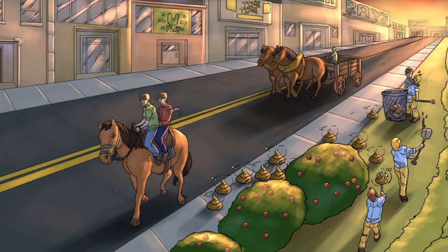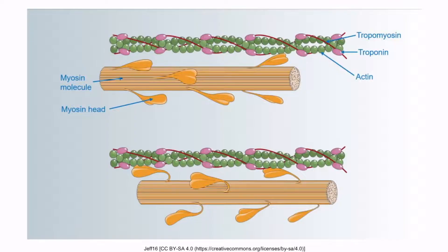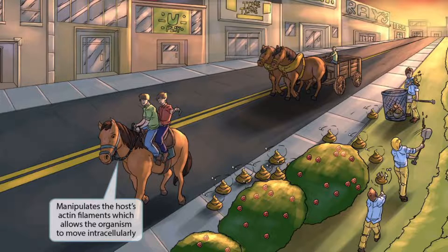We've added horse reins to the scene. If you look closely, the reins look like they're comprised of a bunch of little balls that resemble actin filaments. We've drawn the reins this way to help you remember that Shigella manipulates the host's actin filaments, which allows the organism to move intracellularly.